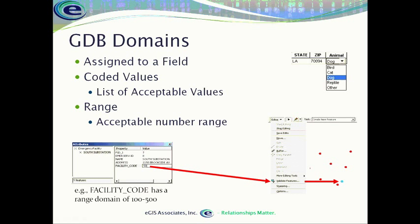Our range domain is an accepted range of values and is used with numbers. Coded values can work with numbers or text, but range domains only work with number fields — integers, floats, and double precision field types. It specifies that the number entered must be between a minimum and maximum value. For example, a range domain might require a value between 100 and 500, as shown in the example. When entering data for a substation facility code, if someone puts in 50 instead of 500, we can validate that and find where the attribute value has violated the domain, and then go fix it.